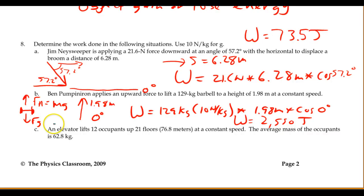Okay in part C an elevator lifts 12 occupants up 21 floors at a constant speed. The average mass of the occupants is 62.8. So very similar to the barbell, our elevator is going to have to apply a force of 12 occupants multiplied by an average mass of 62.8 kilograms multiplied by g which is 10 newtons per kilogram. That's the applied force. It's happening at constant speed and the direction of motion and force are in the same direction so the cosine is going to be the cosine of 0 and the height is 76.8 meters.